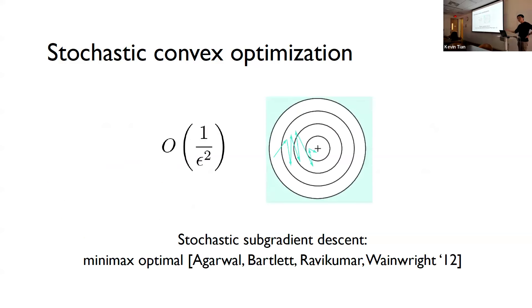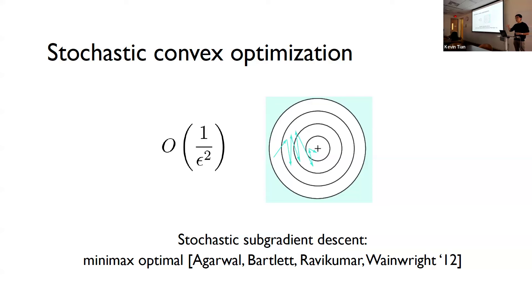Why should you care about stochastic convex optimization? This is arguably one of the most fundamental problems in statistical learning. It captures common estimation problems studied for decades, including variants of generalized linear models and M-estimators — linear regression, logistic regression, support vector machines, and maximum likelihood log-concave estimators. And the story is even simpler here: we have information-theoretic guarantees saying that even in one dimension, the optimal thing is stochastic subgradient descent — query your unbiased estimator 1 over epsilon squared times to achieve epsilon expected error.